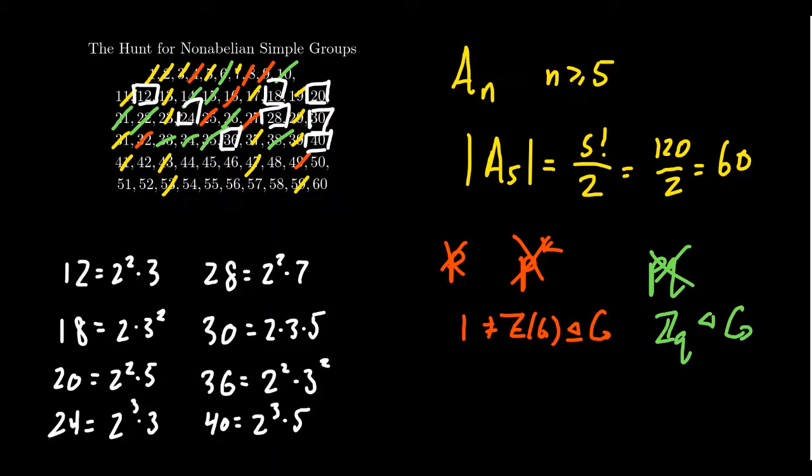Going on to the next row, 42 is actually a product of three primes, 2 times 3 times 7. 44 is four times 11, so 2 squared times 11. We'll deal with them later. 45 is 3 squared times 5.